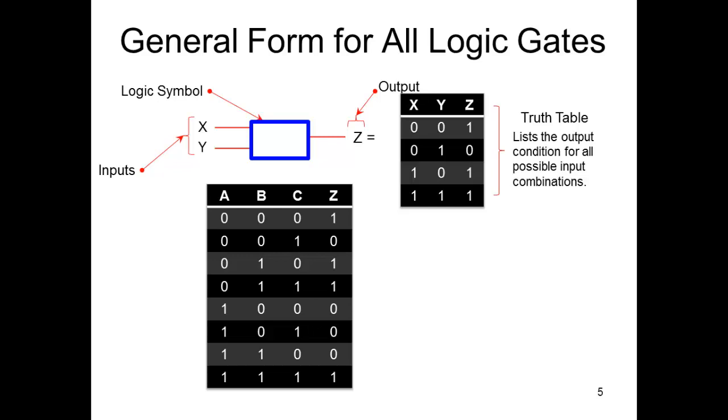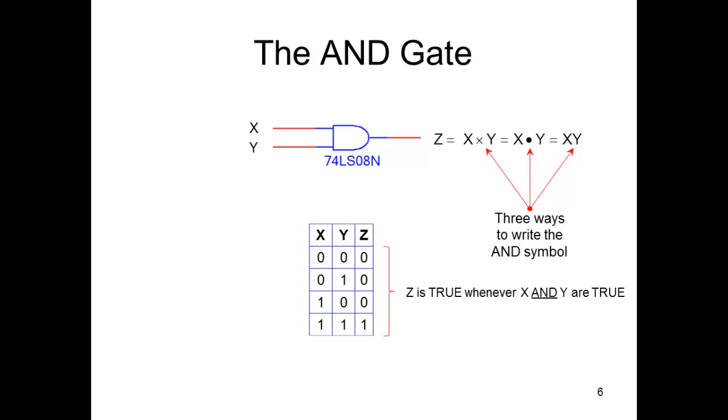The last column Z in both cases is the output, and notice that the rows, the inputs, are counting in binary. In the one that has X, Y, Z, you see we have zero zero as the inputs—that's binary zero—and then zero one, that's one, one zero, that's two, one one, that's three.